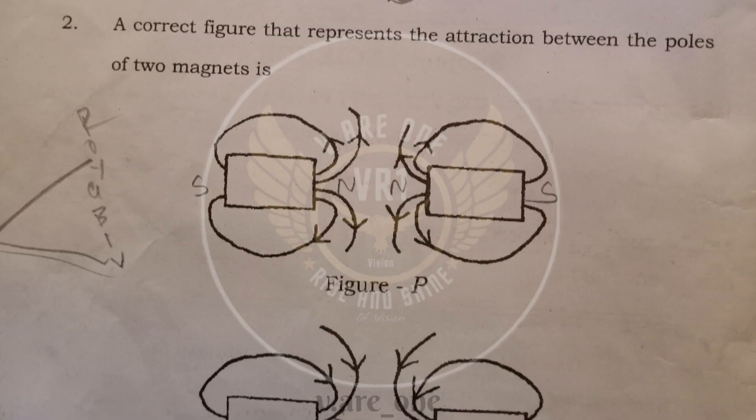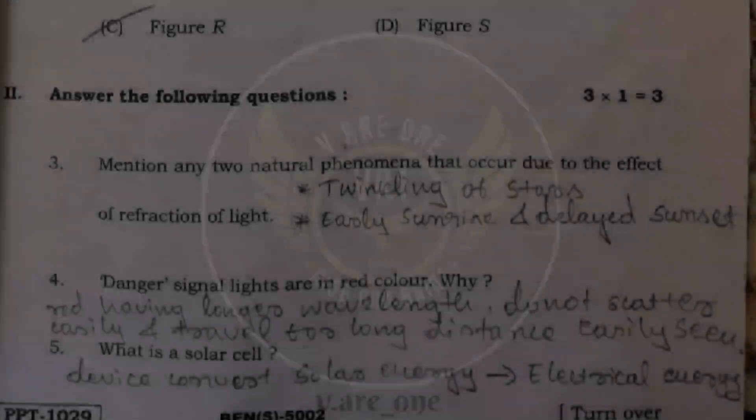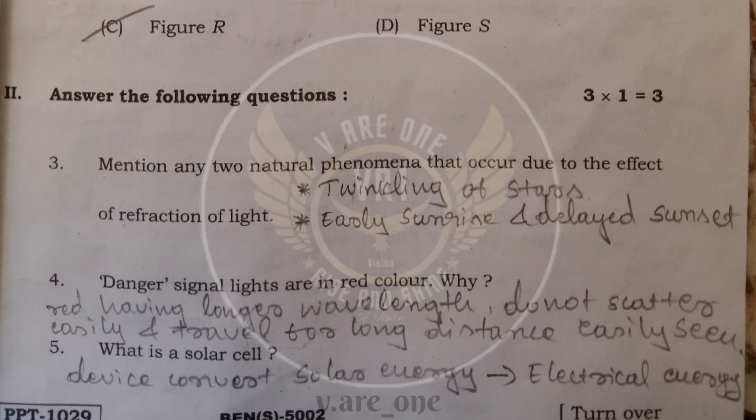Second question, a correct figure that represents the attraction between the poles of two magnets, and the answer is figure R. In second main, answer the following questions.